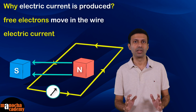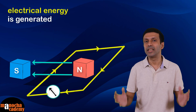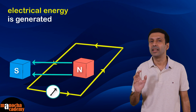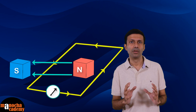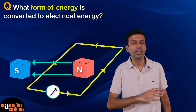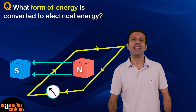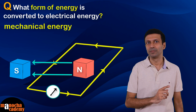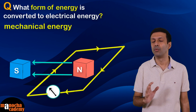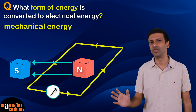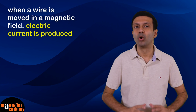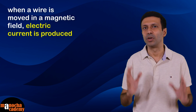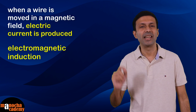Electric current is being produced, so electrical energy is being generated. But where is this energy coming from? It's mechanical energy — the mechanical energy used to move the wire is being converted to electrical energy. So when there is motion of the wire in the magnetic field, current is produced. This is called electromagnetic induction.